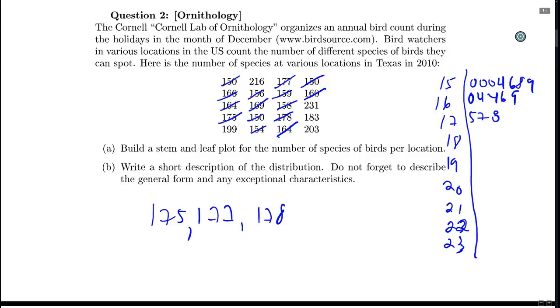And then I have 183, so that's a three for the 18s. I have 199. And then I just have a few numbers left, so 203 for the 20s, and then 216, and then 231. And so this is our stem and leaf plot. This answers part A.